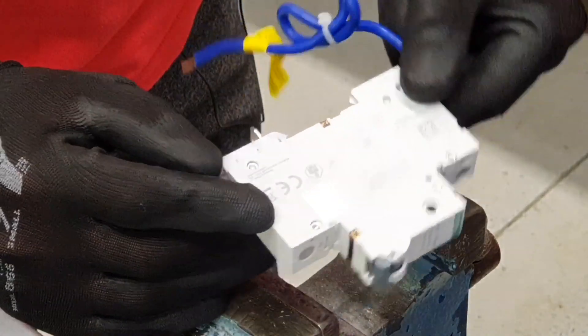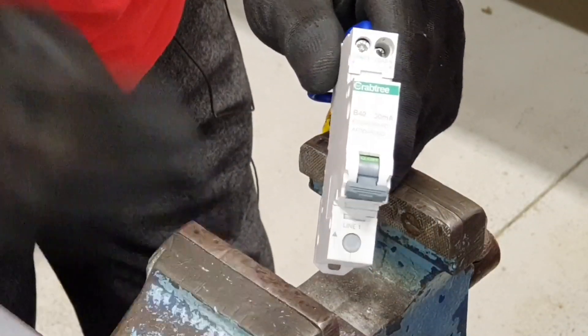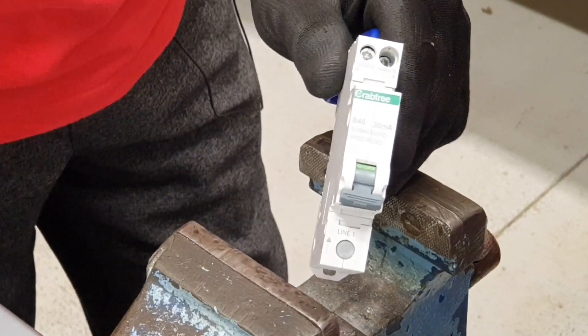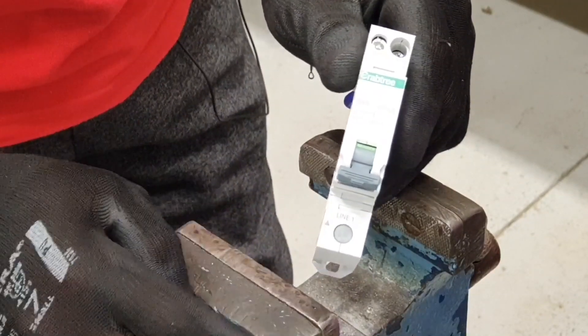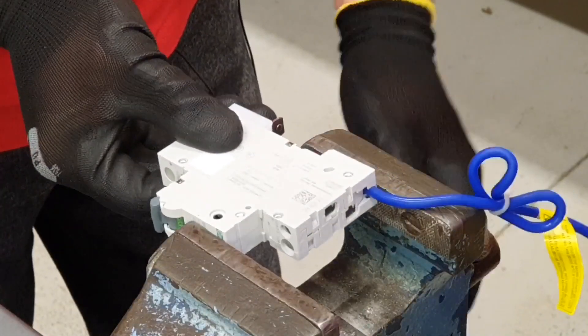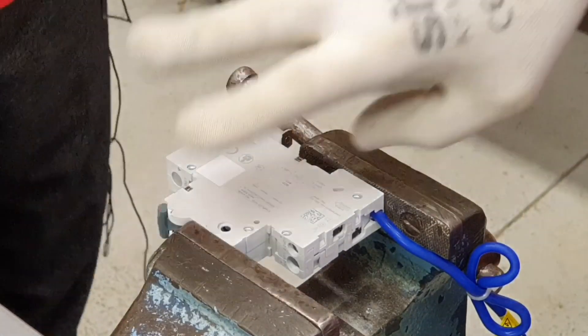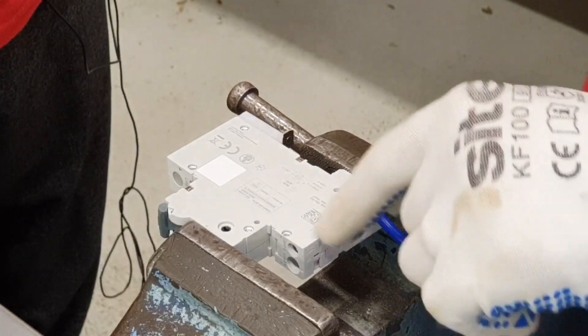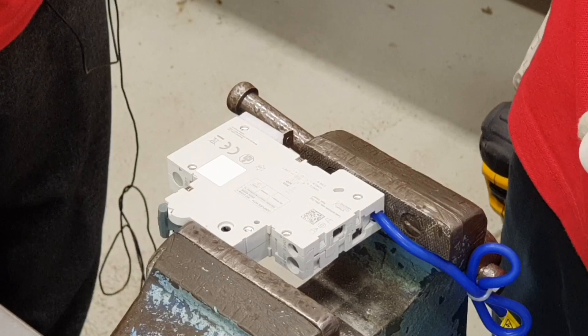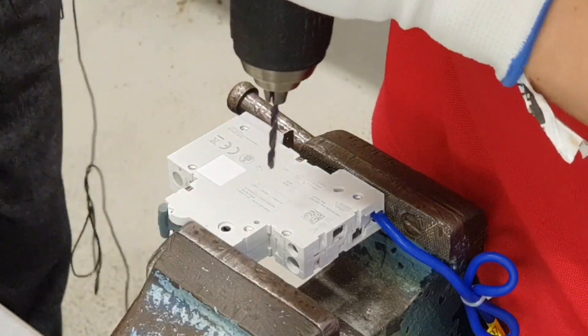So in front of me, I've got a Crabtree Starbreaker designed single module AFDD RCBO in one unit. Let's see if we can take the side off this. We've got these rivets on here, and hopefully we're going to be able to drill those out and then take the side off. I'm going to try and use my arm like a drill press and we'll see how we get on.